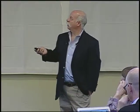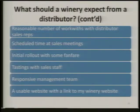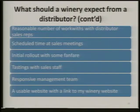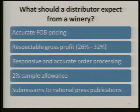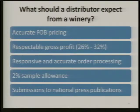You should expect a responsive management team — if they don't return emails or phone calls within 24 hours, something is wrong. A usable distributor website should have a link to your winery website — they don't have to put everything on theirs, but there should be a link. What should a distributor expect from a winery? Accurate FOB pricing that's not going up and down, given in plenty of time. A respectable gross profit — expect them to mark up your wine so they make a gross profit of between 26 and 32 percent.